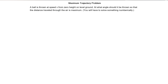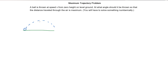A ball is thrown at speed v from zero height on level ground. At what angle should it be thrown so that the distance traveled through the air is maximum? I may have to refresh on some mathematical concepts from previous courses, but let's just solve this.